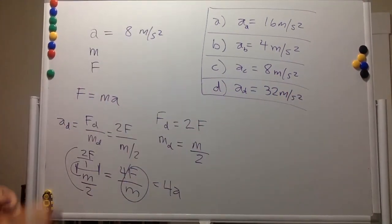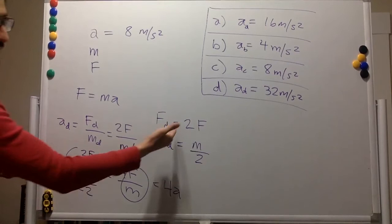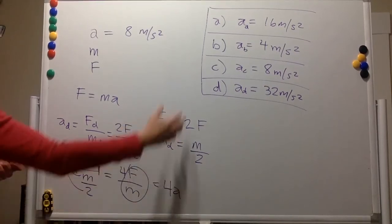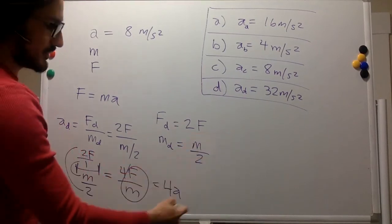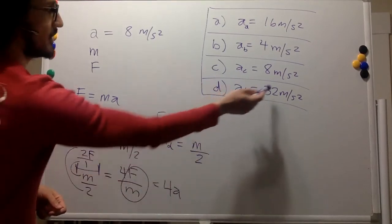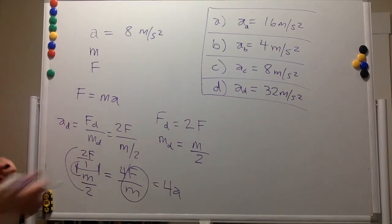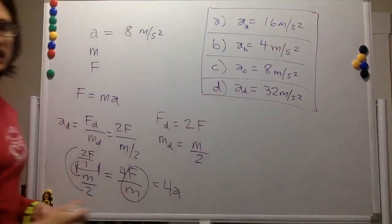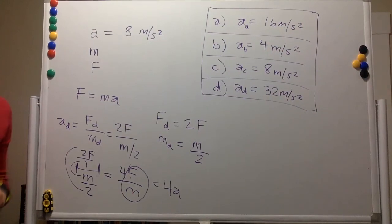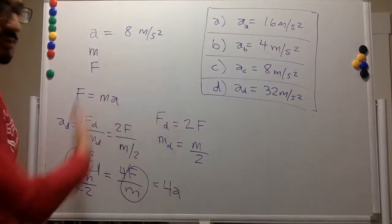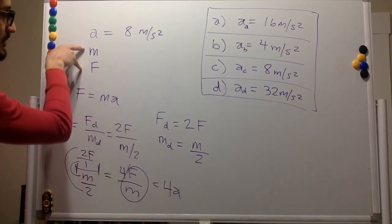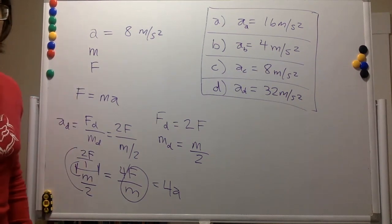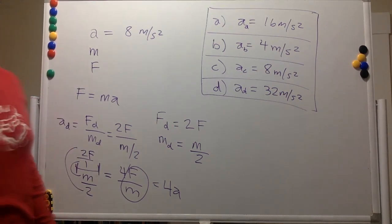When you doubled the force, that doubled the acceleration, and when you halved the mass, that also doubled the acceleration — so you end up with a factor of 4, giving 32 meters per second squared. Now we have more intuition about how force, mass, and acceleration are related, and what the effect of changing mass and force are on acceleration.